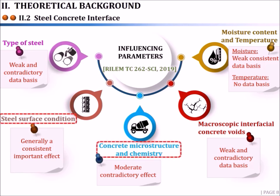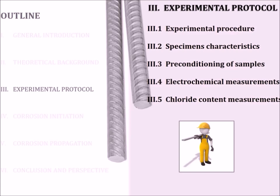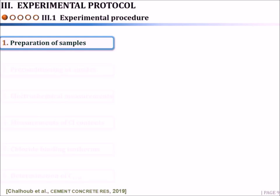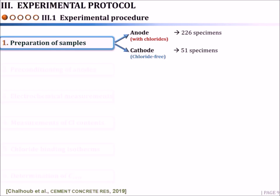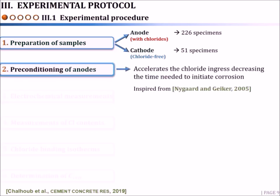This work focused on inspecting the effect of steel surface condition and binder type on chloride-induced corrosion in concrete. Given the controversy in the scientific community about test methods to detect corrosion initiation, it was decided to propose a new experimental protocol to determine the critical chloride content. The experimental setup must take into consideration the localized aspect of corrosion in concrete. Hence, it was based on the galvanic coupling between two physically separated samples — the anode specimen, which is contaminated with chlorides, and the cathode specimen, which is chloride-free. A preconditioning method was used to accelerate chloride ingress in the anode samples, decreasing the usually very long time needed to initiate corrosion.